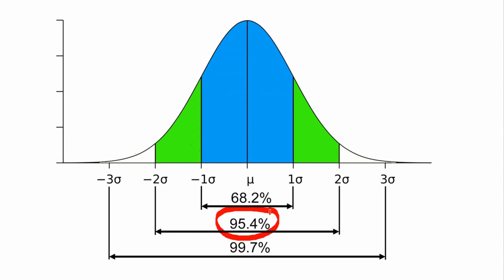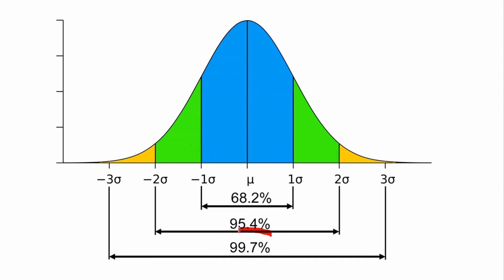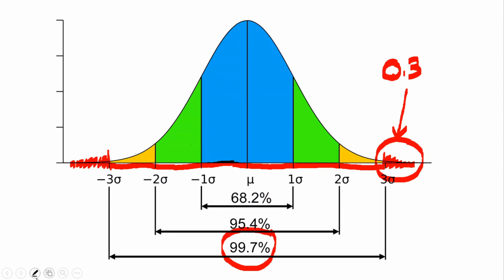95.4% of the values fall within 2 standard deviations from the mean. That means there is a 4.6% probability of data occurring more than 2 deviations from it. 99.7% of data will fall within 3 standard deviations from the mean. This means there is a 0.3% probability of data occurring more than 3 deviations from the mean.